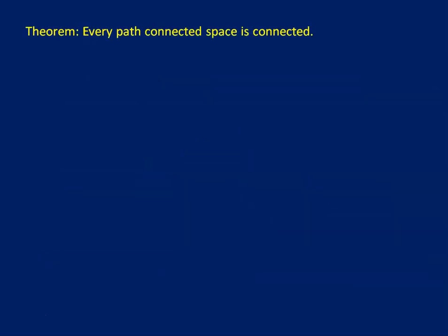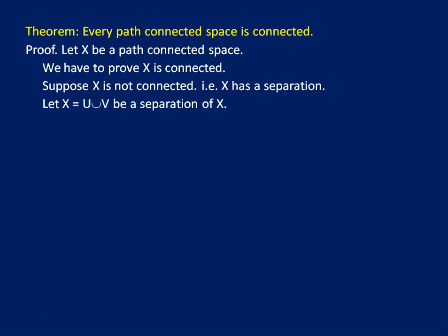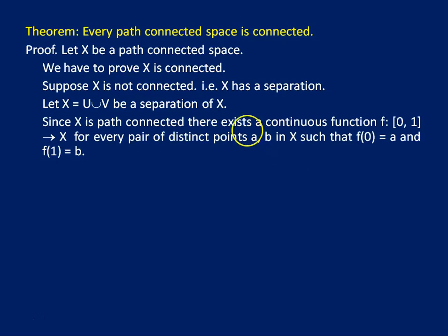Here we have a result: every path connected space is connected. Let us prove it. Let X be a path connected space; we have to prove that X is connected. Suppose X is not connected, then X has a separation. Let X equal U union V be a separation of X, where U and V are two disjoint, non-empty open subsets of X whose union is X. Since X is path connected, there exists a continuous function f from [0,1] to X for every pair of distinct points a and b in X, such that f(0) equals a and f(1) equals b.